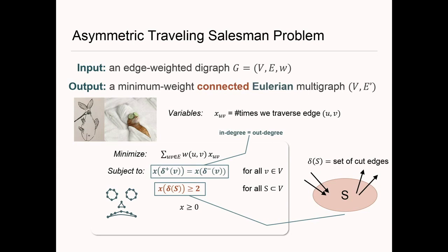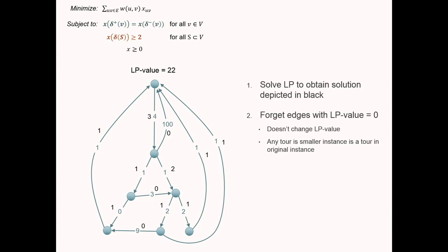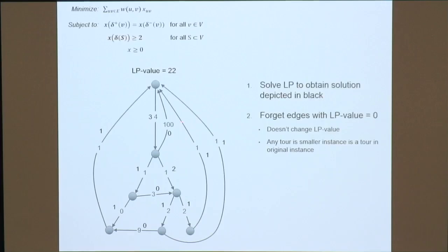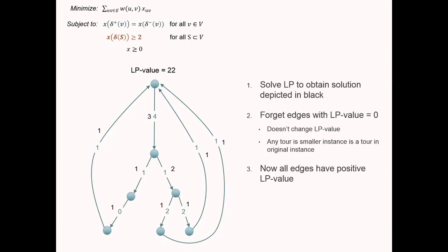Recall the Held-Karp relaxation. A good starting point is to solve the LP and obtain a solution. Some edges are bad — weight 100 for example — but the LP solution doesn't use them. We can forget those edges, since building the tour on the subgraph with positive LP value doesn't change the LP value. We also duplicate some edges so that everything has LP value exactly one.